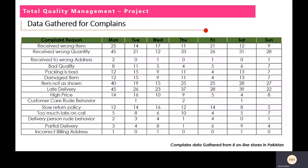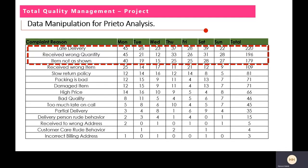Here you can see the data gathered for complaints. Data is gathered from eight online stores in Pakistan and is based on seven days a week, with each day's complaints registered. The complaint reasons are mentioned in the first column. I added a total column and sorted it out. The top three complaint reasons highlighted are: late delivery, received wrong quantity, and item not as shown.